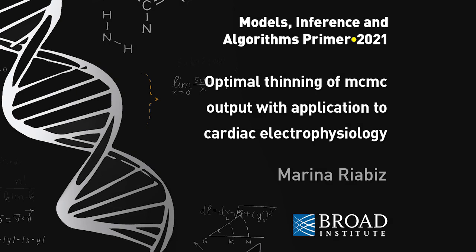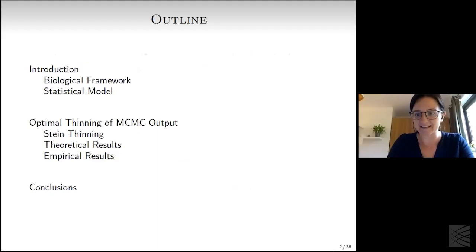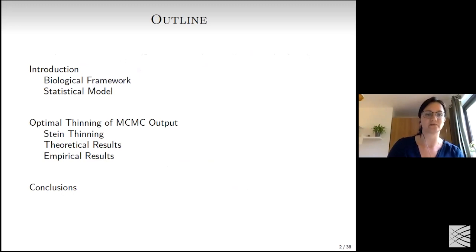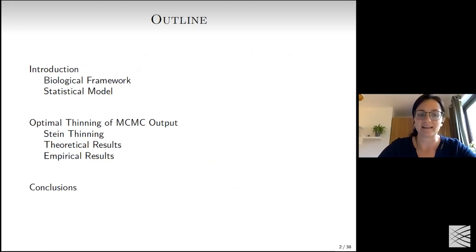The title of this talk is Optimal Thinning — or more fully, optimal post-processing of MCMC output with application to cardiac electrophysiology. The outline covers: first, introducing the biological and statistical framework and the main problem; second, presenting new methodology with theoretical and empirical results; and finally, conclusions.